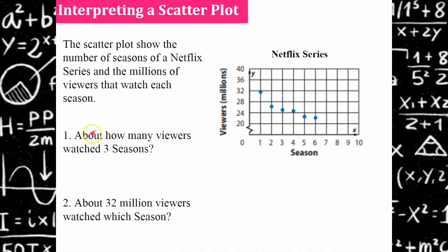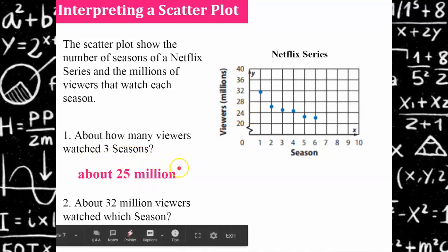Welcome back. So question one, about how many viewers watched three seasons? I would go up to season three and then I go to that data point and I go over, and I'm going to conclude that it's about 25 million viewers. We don't know exactly because there's an interval of four here. So if you said 26, that would be acceptable, just as long as you're using the word about so people know that you are approximating.